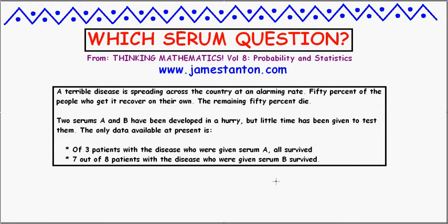A terrible disease is spreading across the country at some alarming rate. 50% of the people who get this disease recover on their own. Unfortunately, the remaining 50% of people will die. Two serums, A and B, have been developed in a mighty hurry, but there's been little time to test them. Of three patients given serum A, all three survived. Seven out of eight patients given serum B survived. That's the only data about serums A and B.